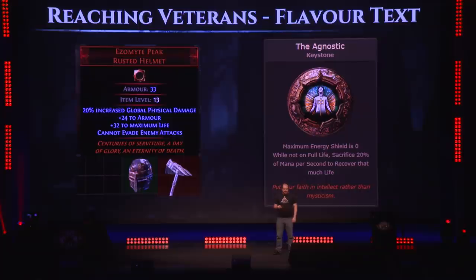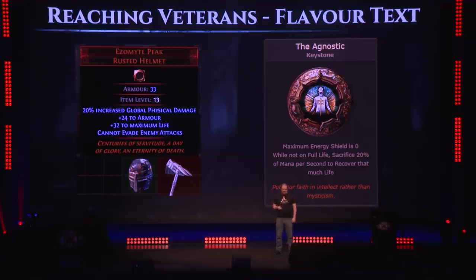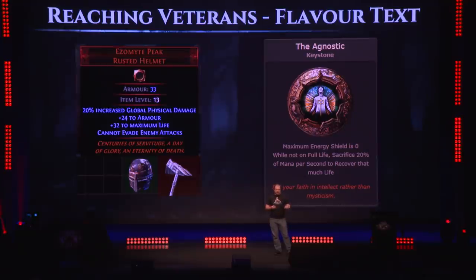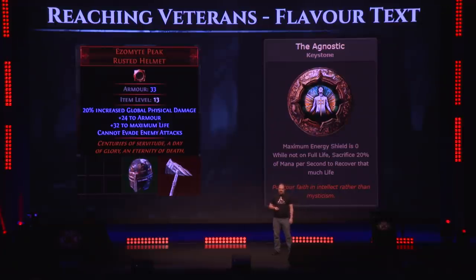That same flavor text grittiness also applies to keystones on the passive tree, which a lot of people don't realize actually have flavor text — they just allocate the node and move on. I had a lot of fun with the timeless jewels, naming them and giving their flavor text. For example, the timeless jewel with Venarius in its mod text actually gives a keystone called The Agnostic, whose flavor text is 'put your faith in intellect rather than mysticism.' On its own, fairly standard fantasy words — except it's about a character who was the primary leader of a religious organization. That paradox raises the question: what does it say about the character of Venarius?